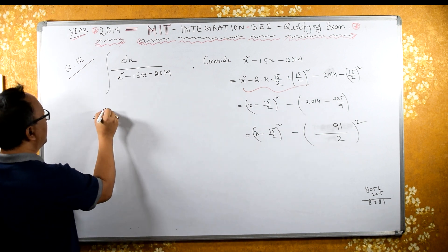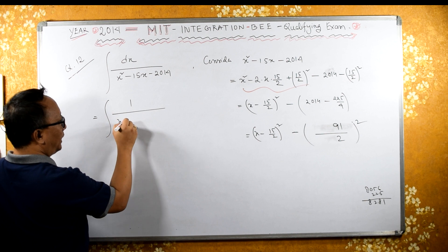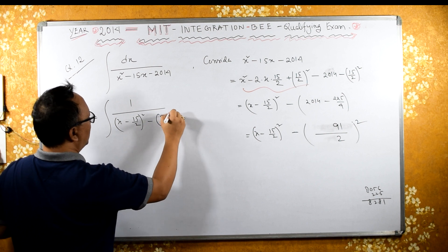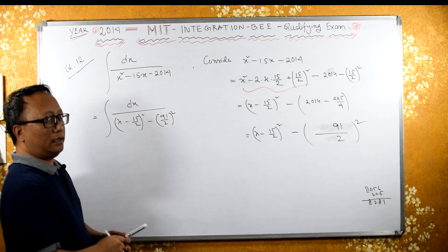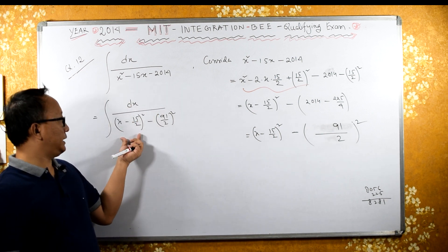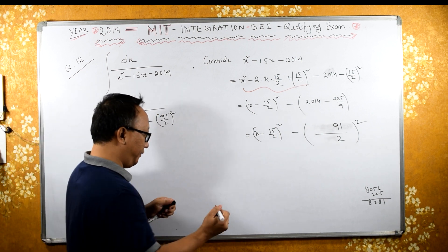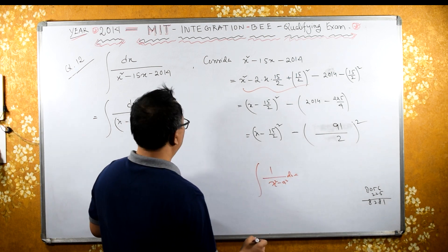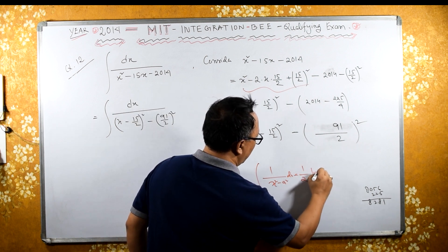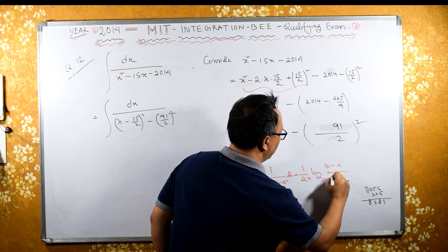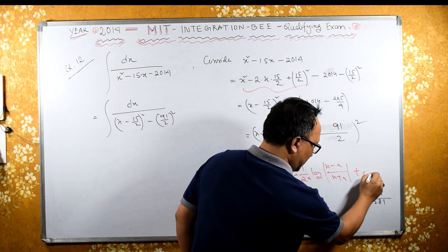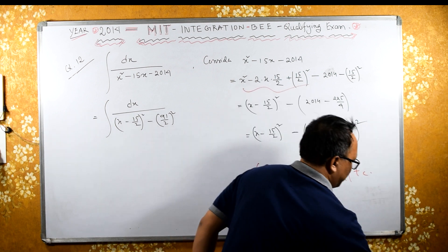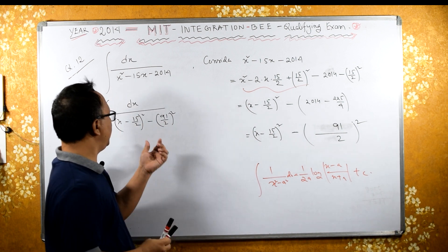This is the same as integral of 1 upon x minus 15 by 2 whole square minus 91 by 2 whole square, times dx. Now we have integral of the form integral of 1 by x squared minus a squared.